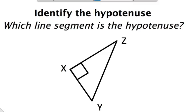This problem is asking me to identify the hypotenuse. The first step to do that is to identify the right angle, and if I look right here, here's my right angle mark, so the answer is angle x is my right angle.